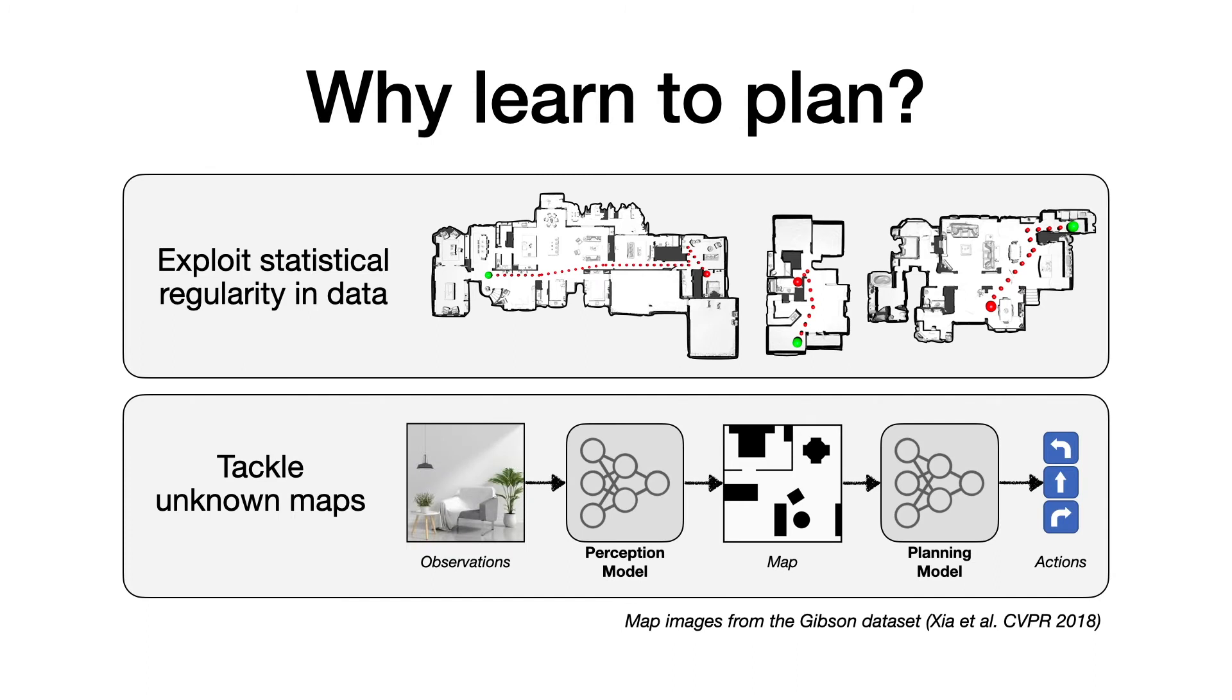Second, a critical assumption of classical planning algorithms is that a global ground truth obstacle map must be known to the agent ahead of time. A learned solution could not only provide the ability to deal with partial or noisy maps but also help build maps on the fly while acting in the environment by backpropagating through the long-range plans without having any map supervision.